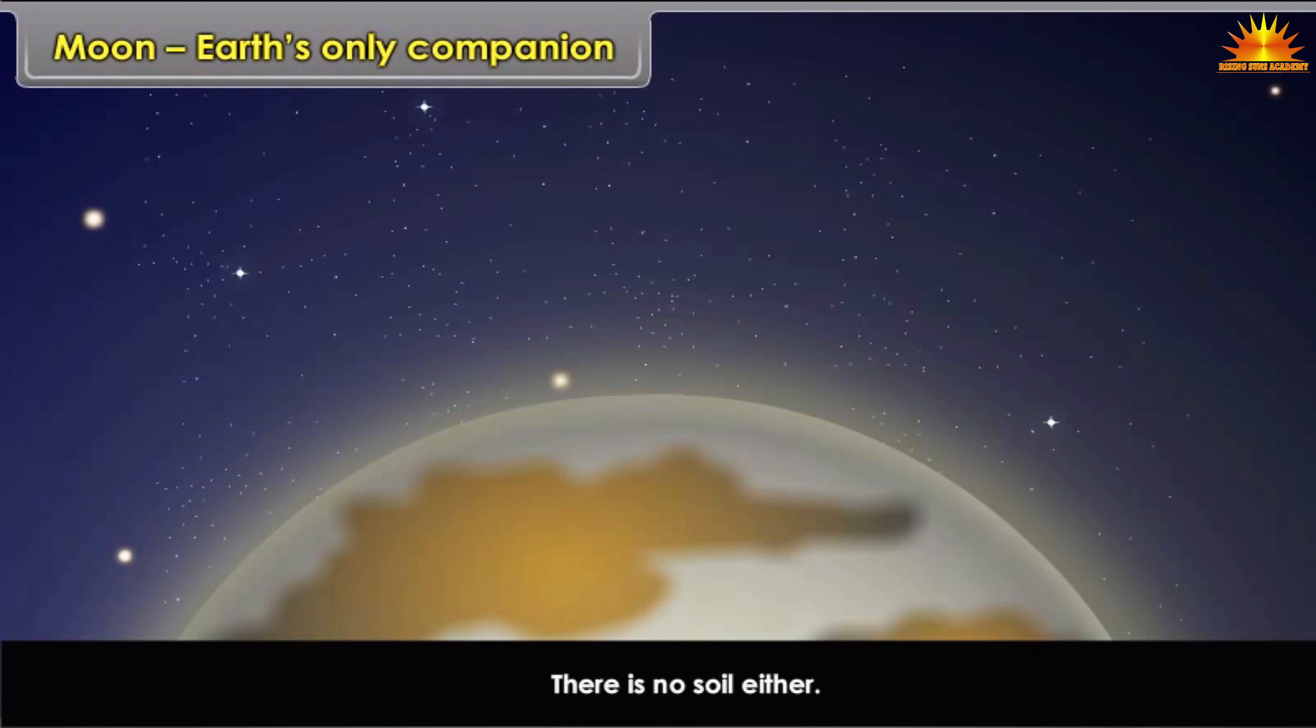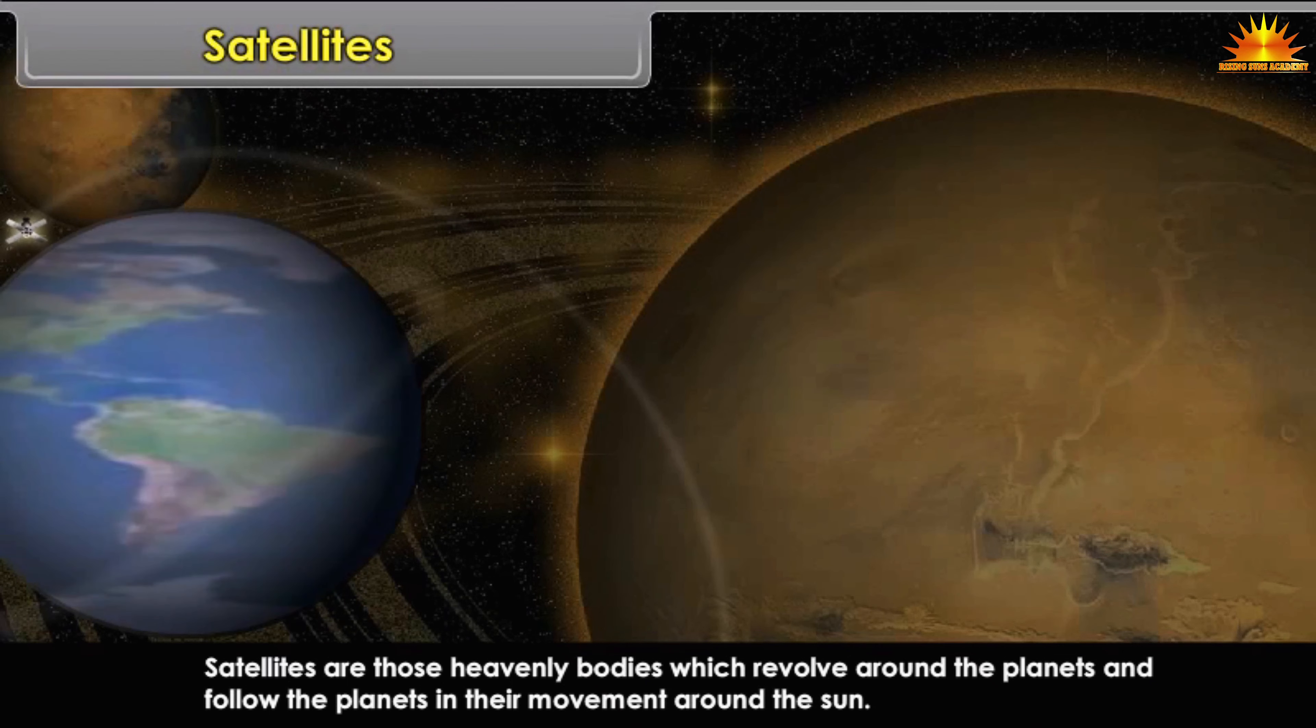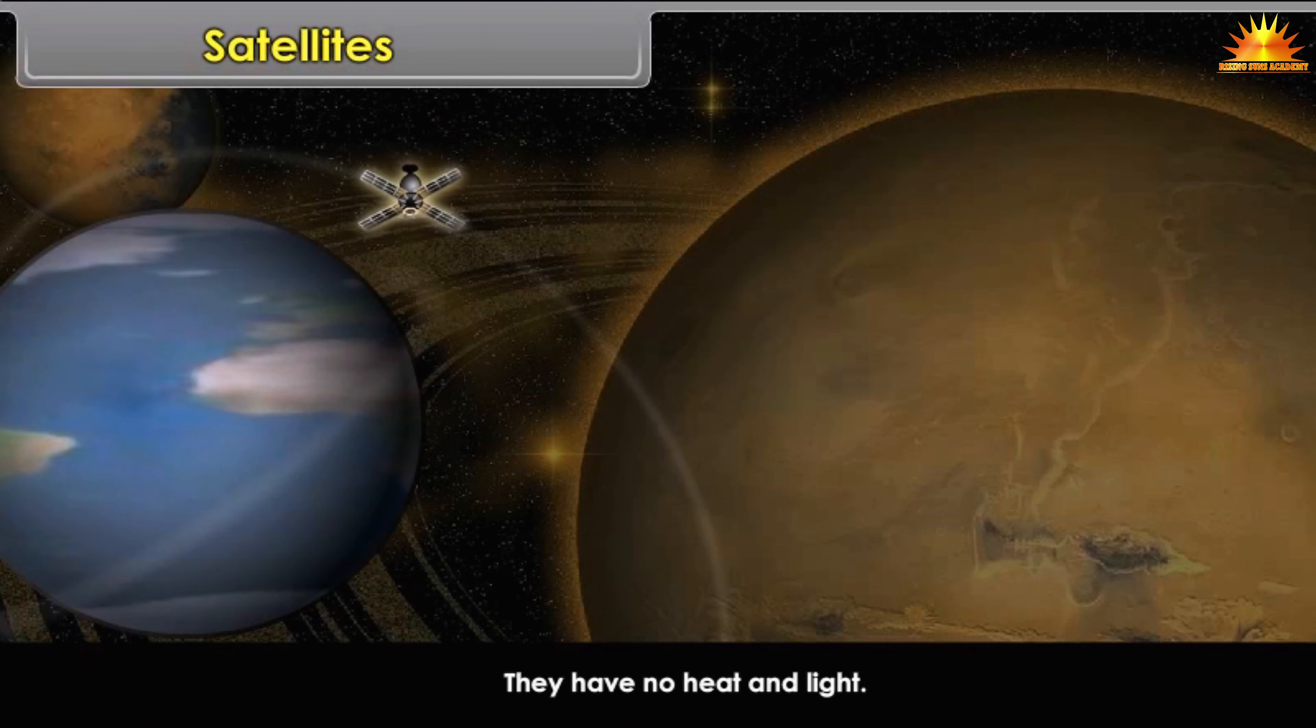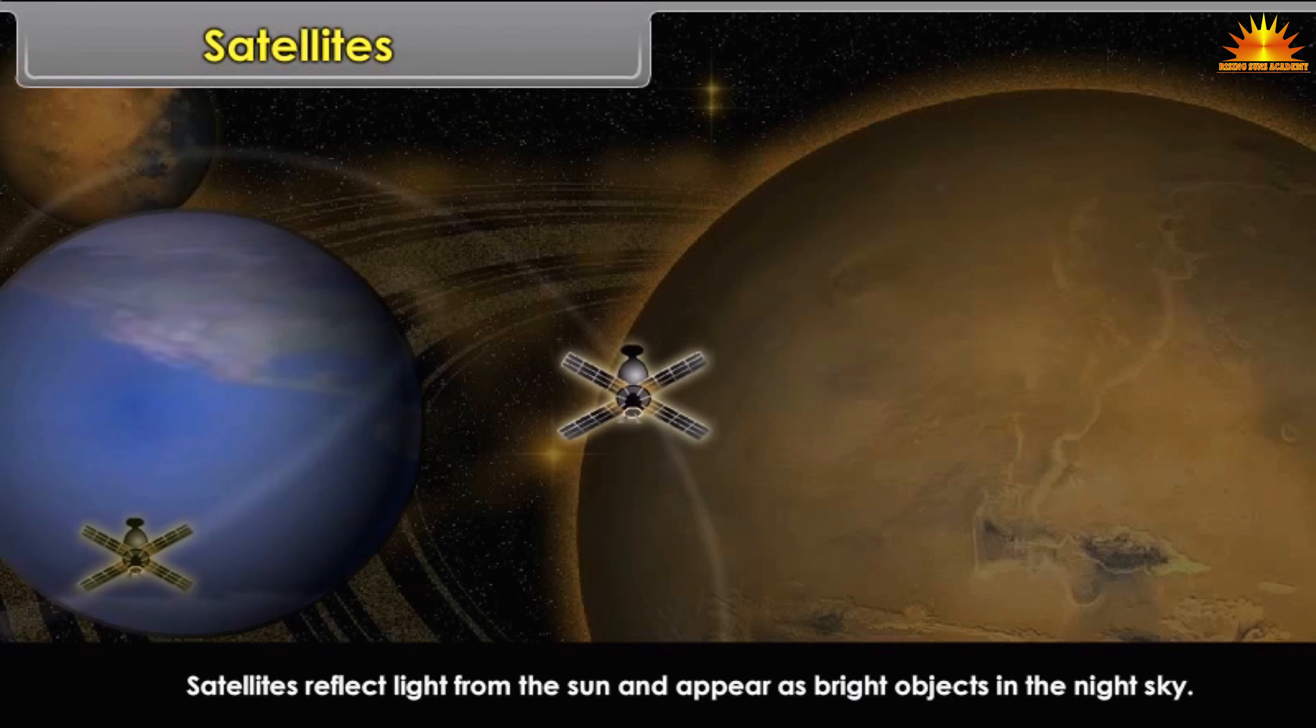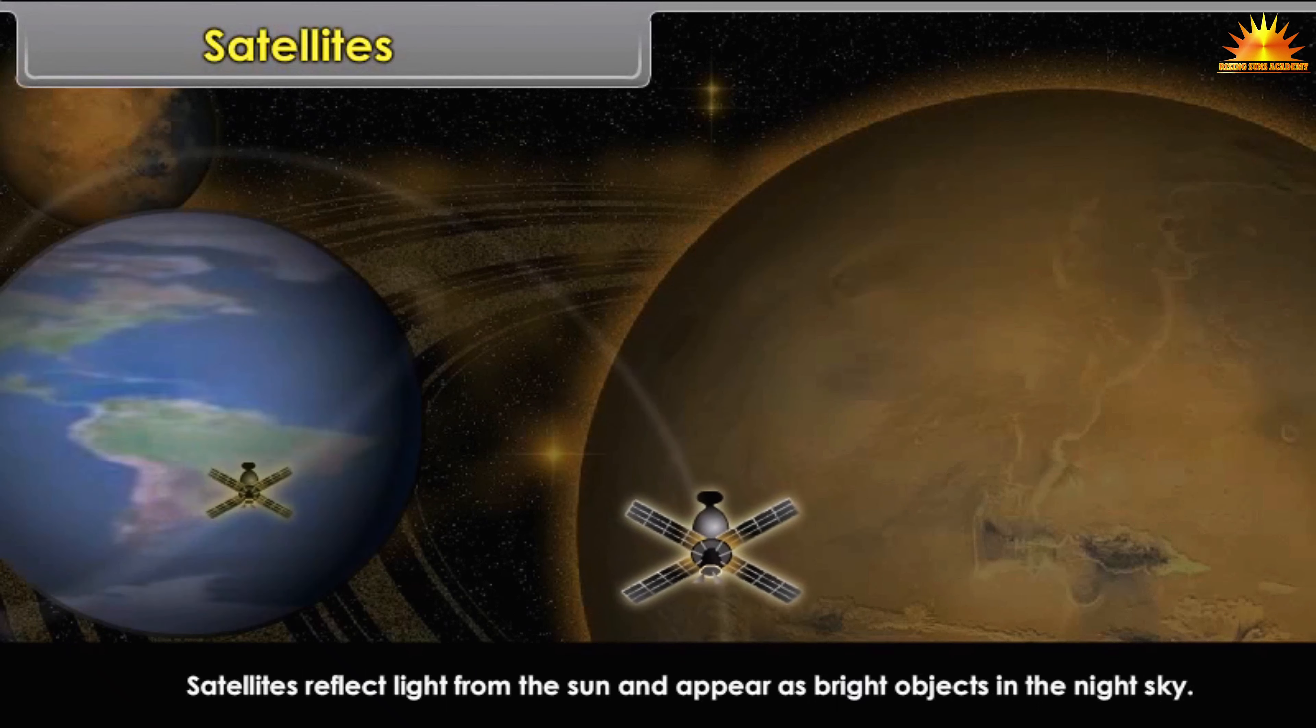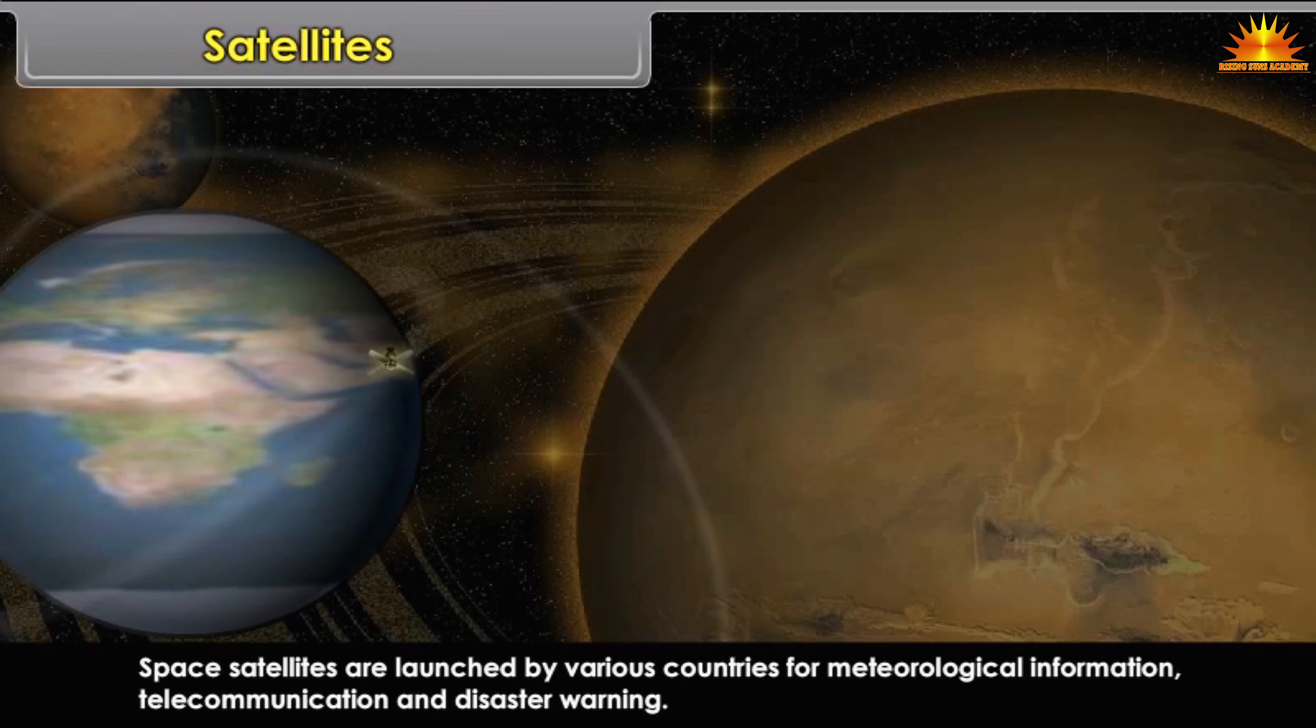Satellites: Satellites are those heavenly bodies which revolve around the planets and follow the planets in their movement around the Sun. They have no heat and light. Satellites reflect light from the Sun and appear as bright objects in the night sky. Space satellites are launched by various countries for meteorological information, telecommunication and disaster warning.